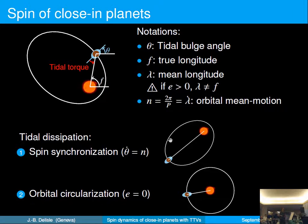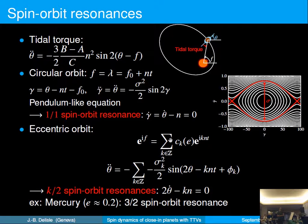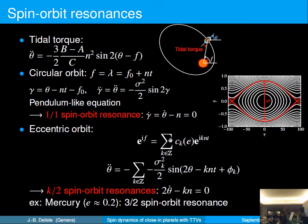This synchronization corresponds to a one-to-one spin-orbit resonance. We can study the dynamics of this resonance by looking at the expression of the tidal torque. Here, theta is the angle of the tidal bulge of the planet; B minus A over C is the deformation of the planet; and F is the true longitude of the planet. For a circular orbit, the true longitude equals the mean longitude, a linear function of time. Replacing this expression in the equation of the tidal torque, you obtain a simple pendulum-like equation and the simple pendulum phase space.